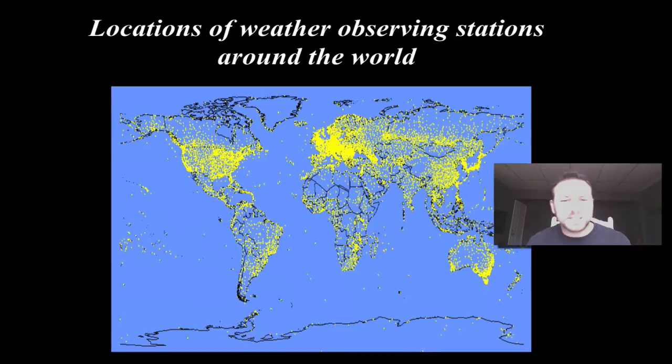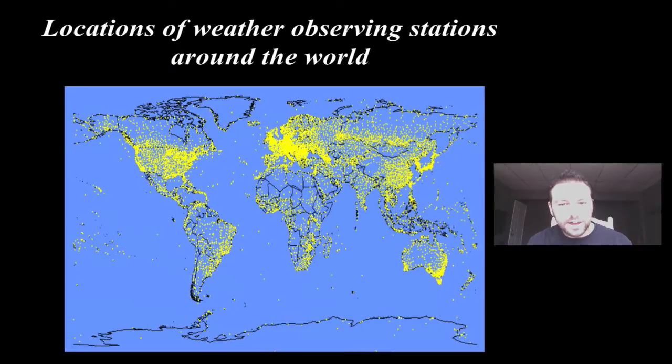These are weather stations around the world, and you can see there are a lot of weather stations. The more weather stations we have means the more data we can collect, which means that potentially we can make better forecasts about our weather.